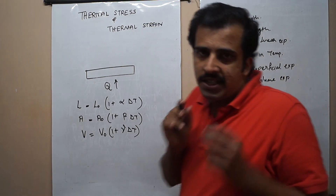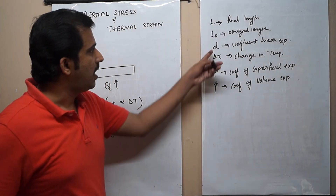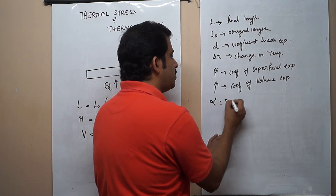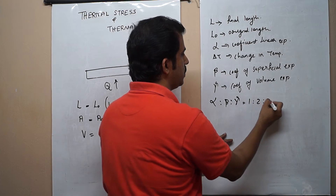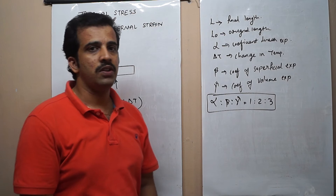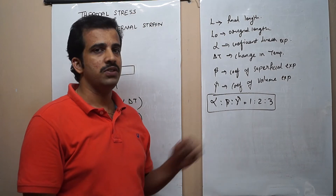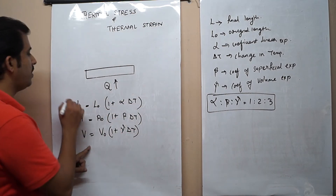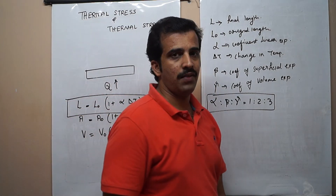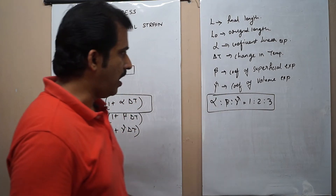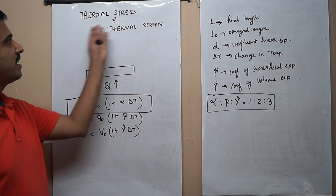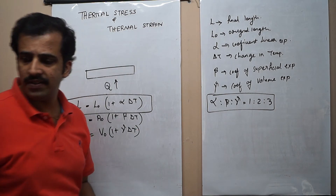There is a relationship between these three: α, β, and γ. That is, α:β:γ = 1:2:3. You can use this relation while solving numericals if the alpha value is not known, because we will be dealing with the equation L = L₀(1 + α·ΔT). Now we will study when and where thermal stress and thermal strain will be generated.